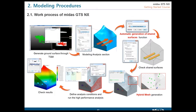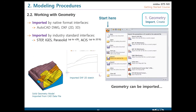Now let's look at how the general process looks in Midas GTS. I'm sure you are familiar with all of these steps. This picture shows how the practical approach looks: in Midas GTS we start from generation of a ground surface or import of geometry, then use tools to edit the geometry to prepare for meshing. Obviously, the next steps are meshing, boundary conditions, and then post-processing.